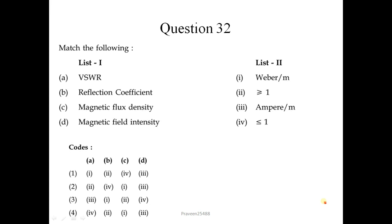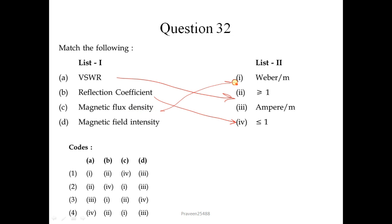Question number 32 - match the following. VSWR (Voltage Standing Wave Ratio) varies between 1 to infinity. Reflection coefficient varies between 0 to 1. Magnetic flux density has units of Weber per meter squared. Magnetic field intensity is related to current, so its unit is Ampere per meter. The correct sequence is 2-4-1-3, and the correct option is 1.